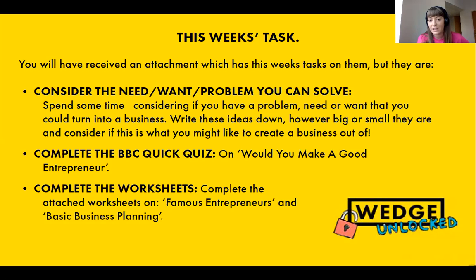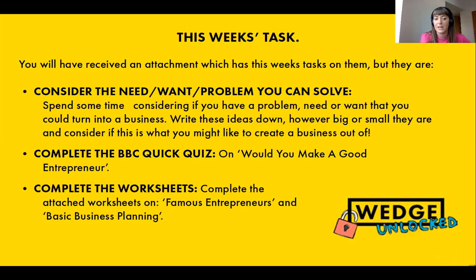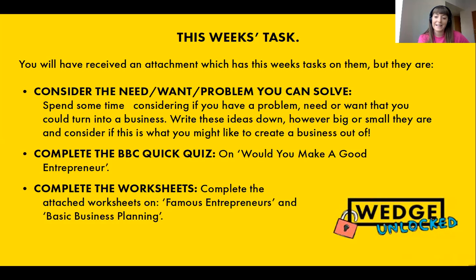Number two: complete the BBC quick quiz on would you make a good entrepreneur — looking at characteristics and personality traits, but remember it's just a bit of fun. Number three: complete the two worksheets attached to the email — the first one is on famous entrepreneurs and the second is a basic business planning worksheet. As always, you can contact us if you have any problems. Have a go at these three tasks and bring your answers along to the group Zoom, which will be next Tuesday — we'll send you an invitation nearer the time. I think that is everything, so thanks very much to everyone for watching and hopefully we'll see you all next Tuesday.